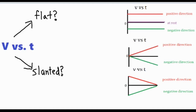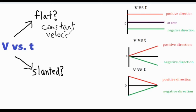In this video we're going to be taking a look at velocity versus time graphs. These graphs show how fast something is going at a specific time, and we have seven different combinations to analyze. The first question we're going to answer is: is the graph flat or is it slanted? If it's flat and remains at the same value on the y-axis, that means the velocity remains the same as time elapses, so the object is moving at a constant velocity. If the graph is slanted at all, that means the velocity is changing, which means the object is accelerating.